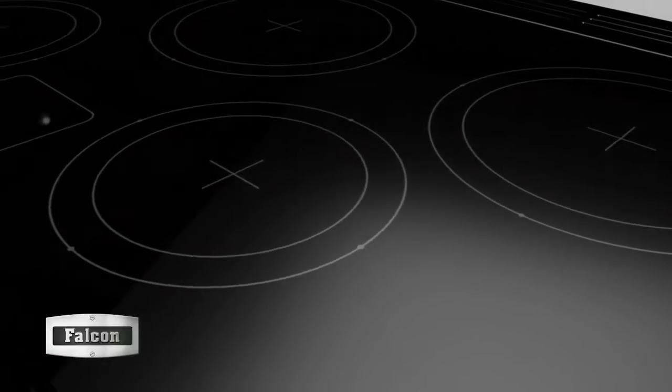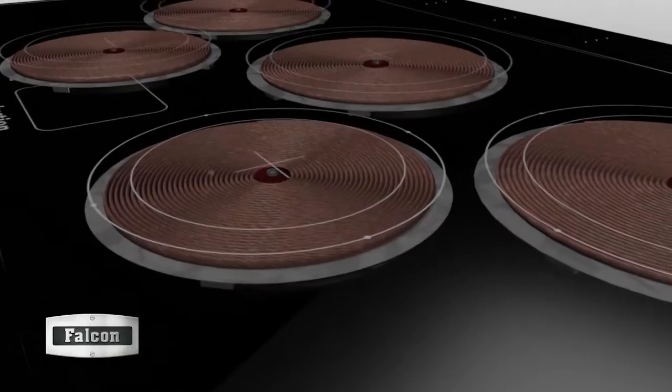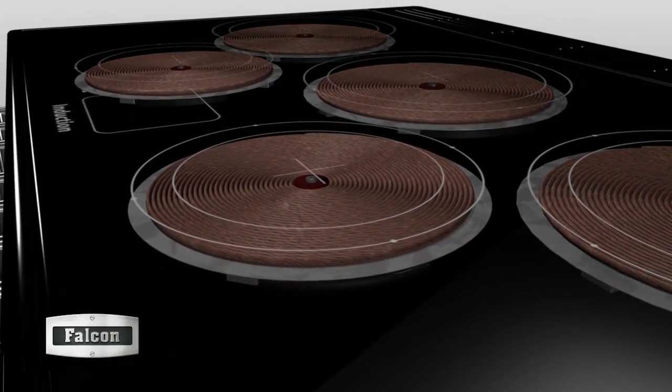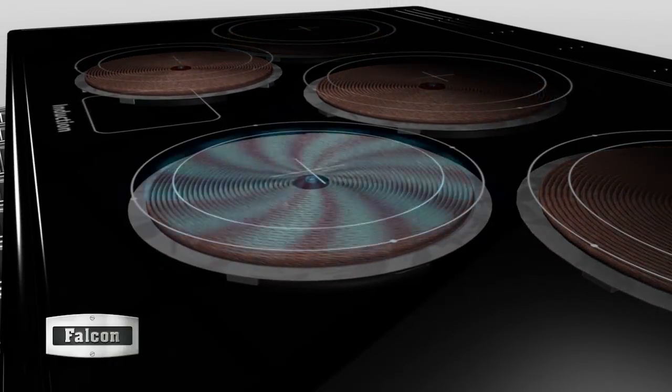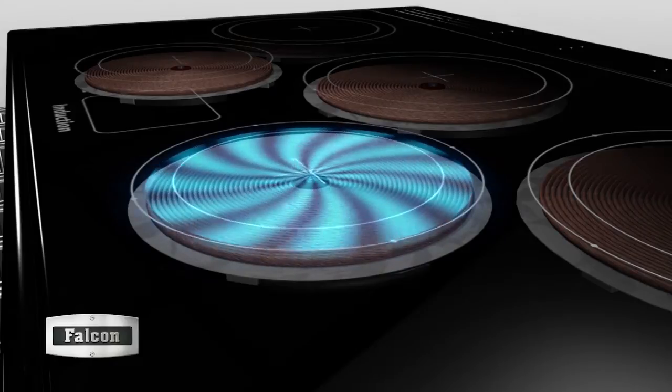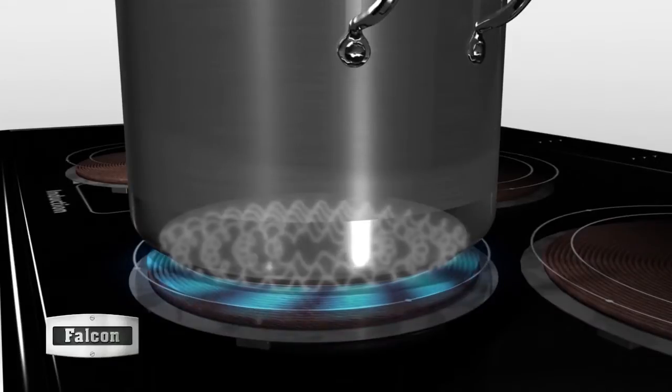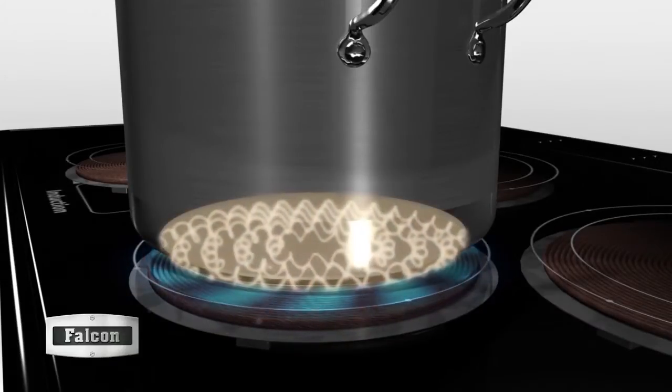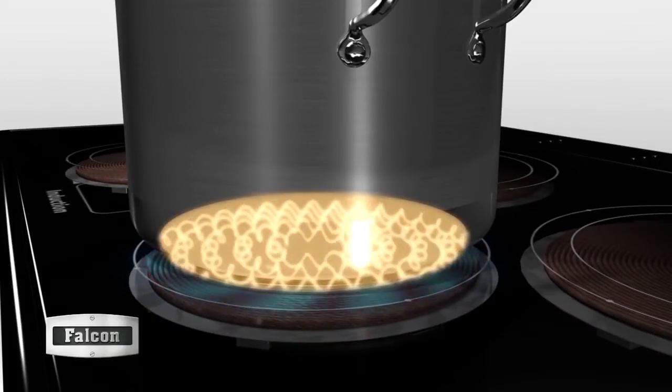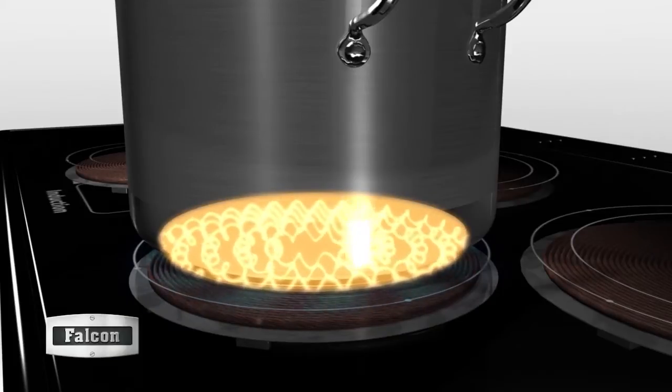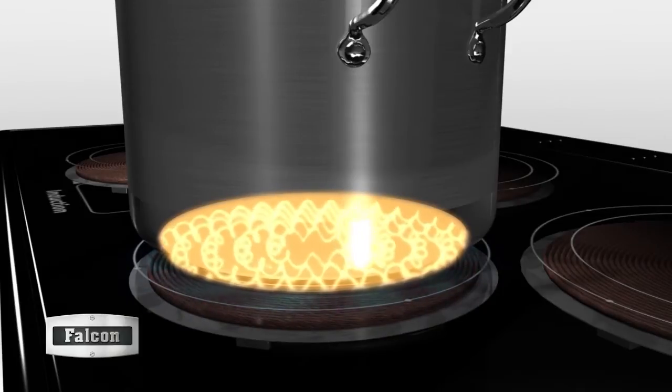Below the glass of each of the five induction zones sits a large electrical induction coil that is used to create a high-frequency magnetic field. This field connects directly with the metal in the pan's base. Eddy currents then react with the resistance of the base material in the pan and cause the base and therefore the pan's contents to heat up.